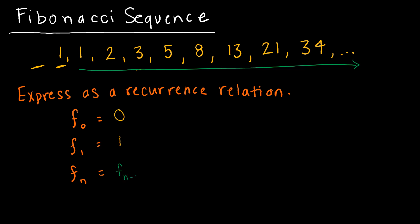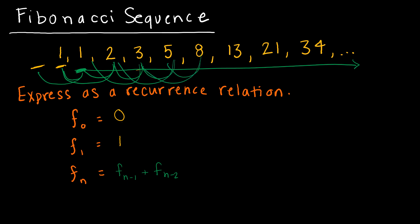So F of n equals F of n minus one plus F of n minus two, for n greater than or equal to two, where n is also an integer — we're not going to plug in 2.5 or 3.7, only integers.